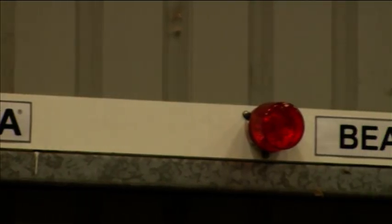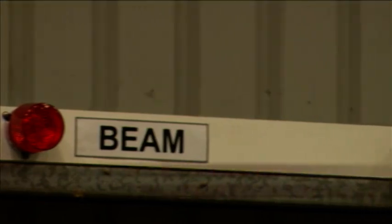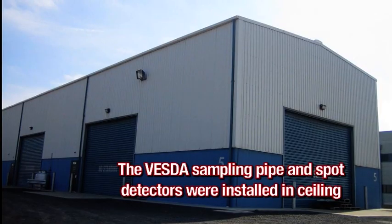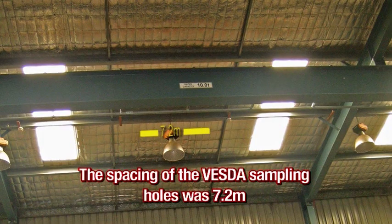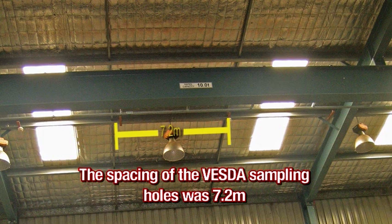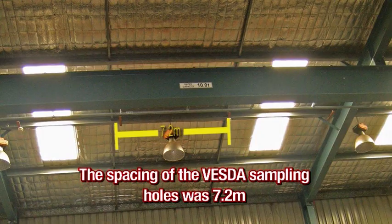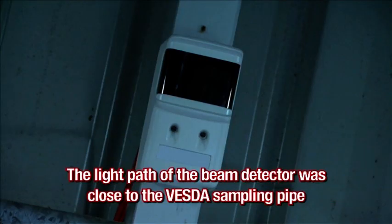Some key points to note about the tests are that the VESDA sampling pipe and spot detectors were installed at the warehouse ceiling. The spacing of the VESDA sampling holes was 7.2 meters and spot detectors were mounted next to each VESDA sampling hole. The light path of the beam detector was close to the VESDA sampling pipe.